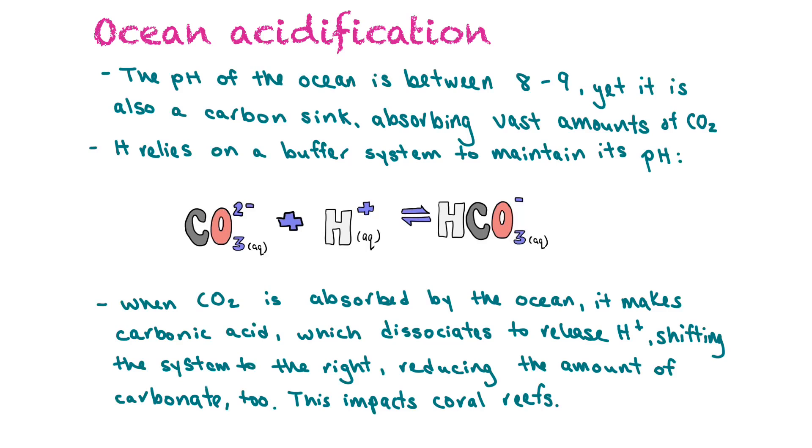So this would be the reaction here: CO3²⁻ plus H⁺ makes HCO3⁻. When carbon dioxide is absorbed by the ocean it makes carbonic acid which dissociates to release hydrogen ions, and that shifts the system to the right, reducing the amount of carbonate available. Because of that it impacts coral reefs, causing them to decline because it's removing the carbonate that allows coral to build its skeleton.